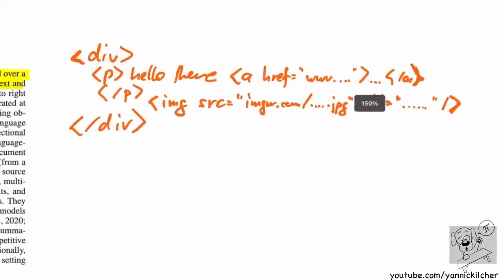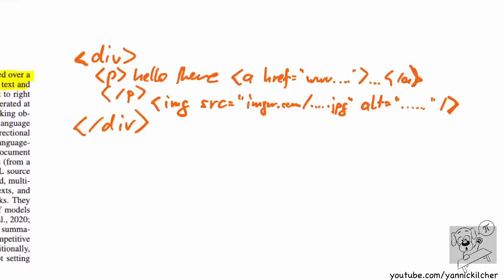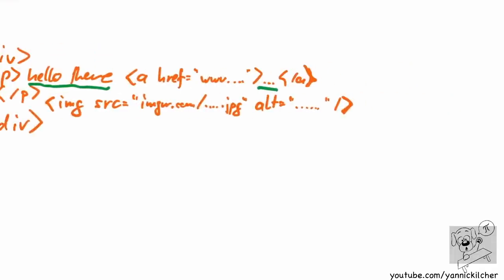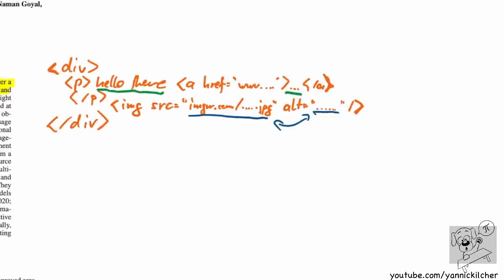Previous work - for example GPT-3 - would simply only take the text bits, scraping websites for the containing text to do language modeling. Other models like DALL-E are a model where you put in text and it gives you an image. Models like CLIP check whether an image and a piece of text go together. These approaches always take the alt text of an image tag and its source image as pairs - a kind of weak supervision.